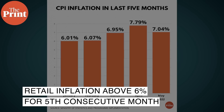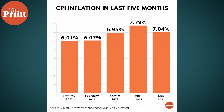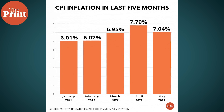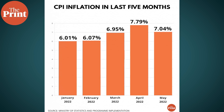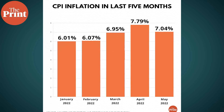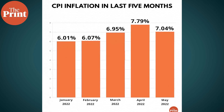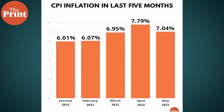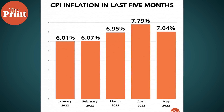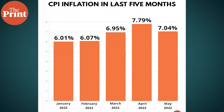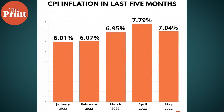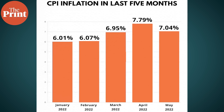It is the fifth consecutive month that the inflation rate has remained above 6%, which is the upper end of the RBI's tolerance band. According to India's monetary policy framework, the medium-term inflation target is 4% with a fluctuation of 2% allowed on either the upside or the downside.